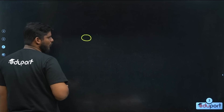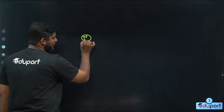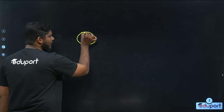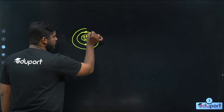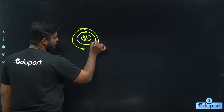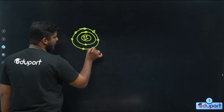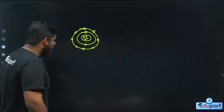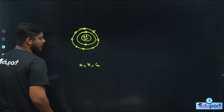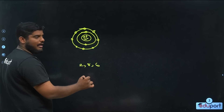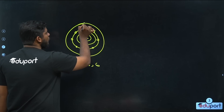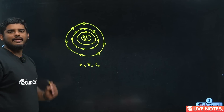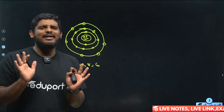This is the nucleus. We have 16 protons and 16 neutrons. Then we have the first shell with 2 electrons, reading the electron configuration as 2, 8, 6.